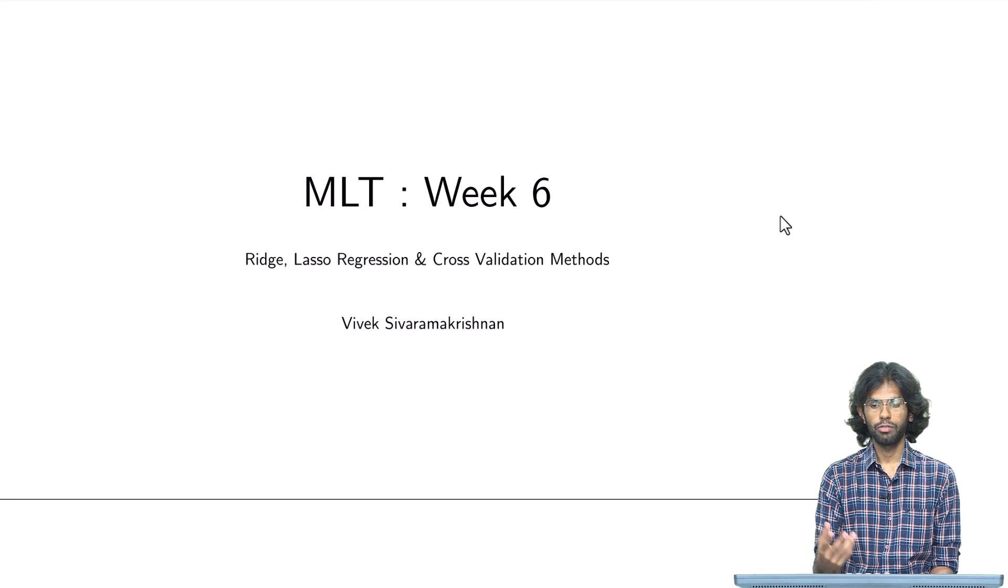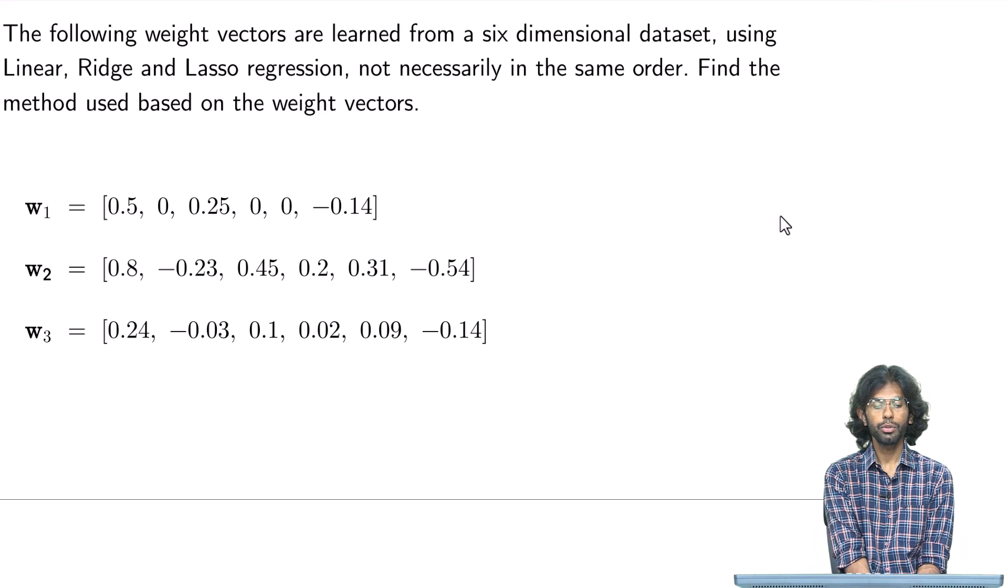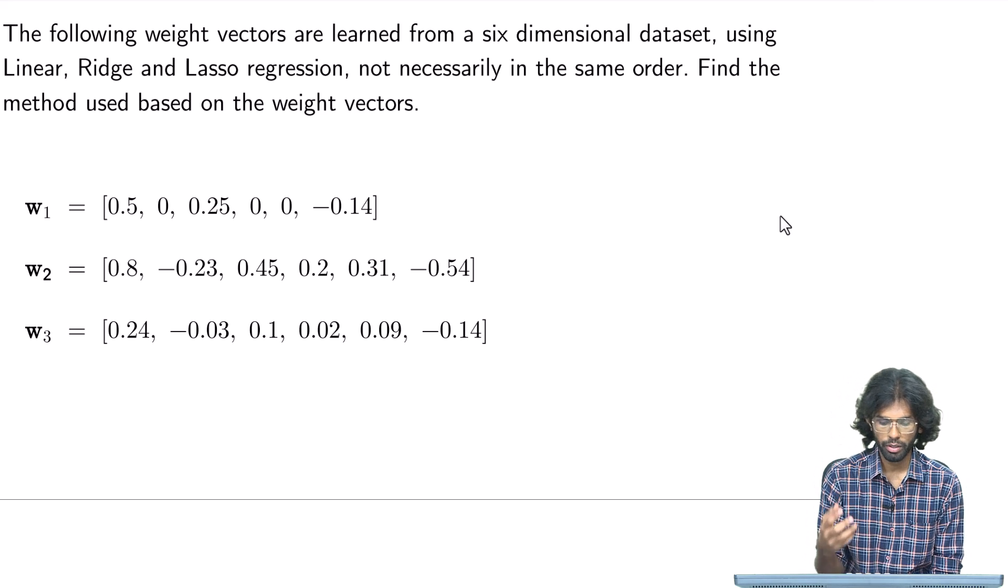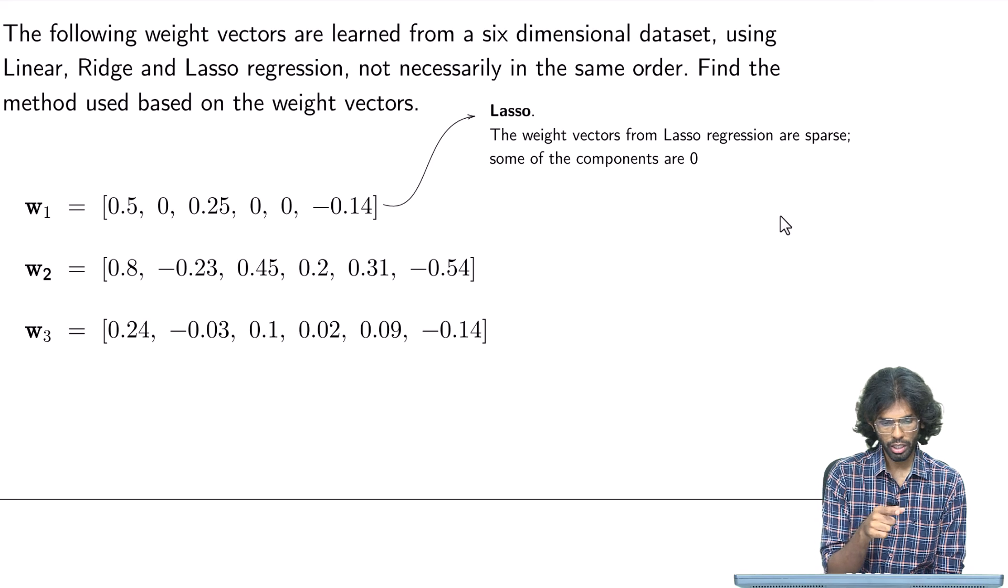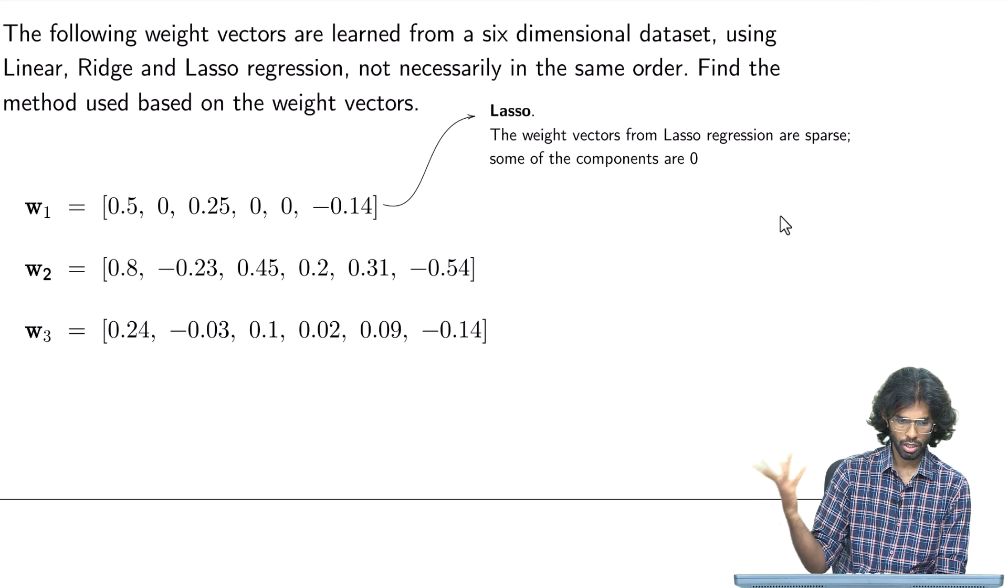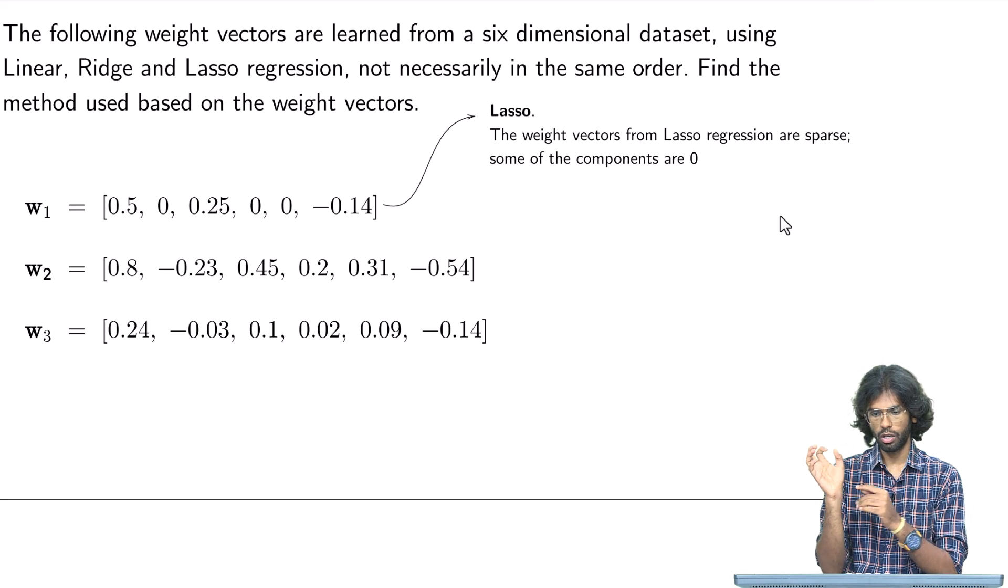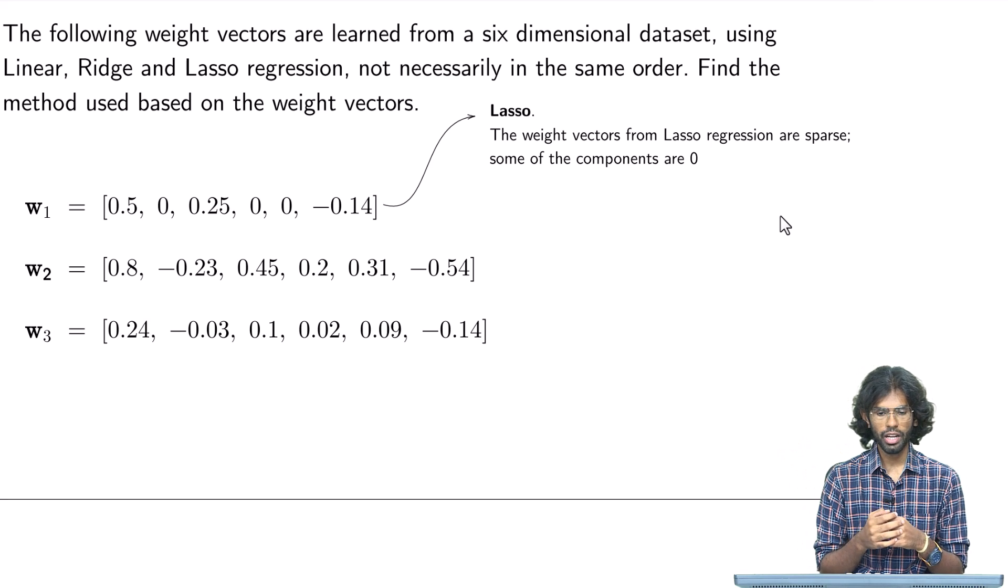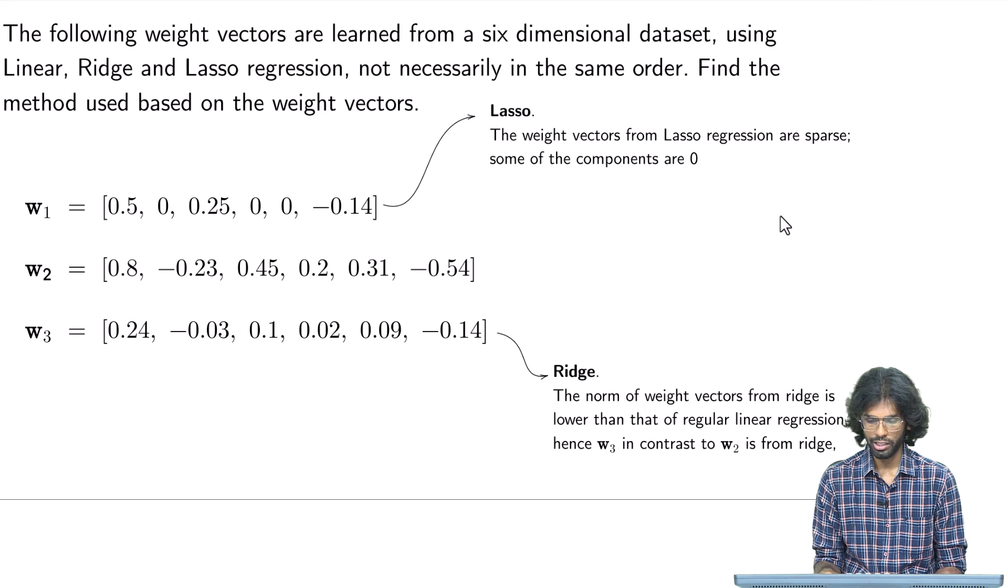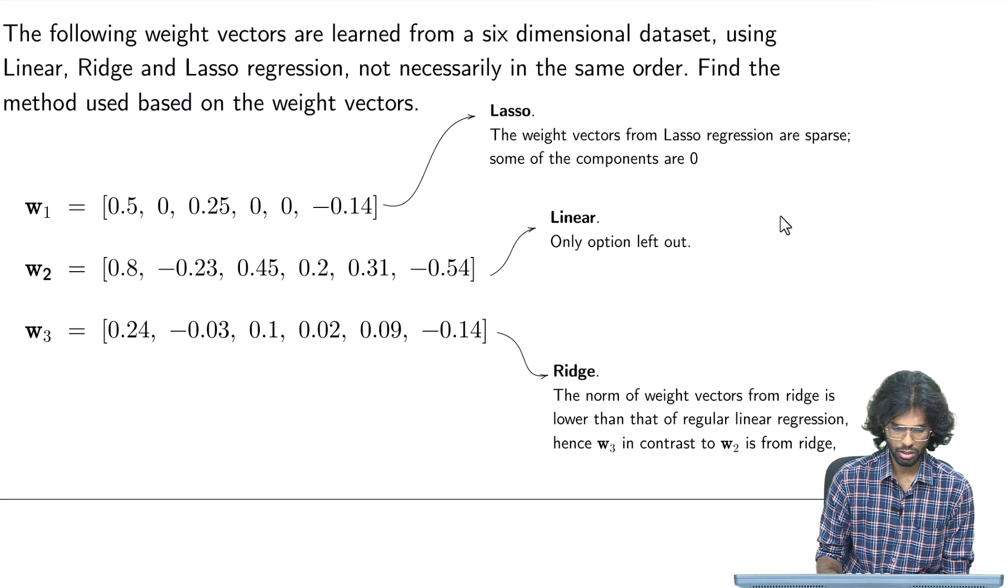We will be going through some numericals for this week now. The first question: the following weight vectors are learned from a six-dimensional dataset using linear ridge and lasso regression, not necessarily in the same order. We need to find which vectors came from which paradigm. First, you can see w1 has sparse weights, and only lasso outputs sparse weights. Therefore, w1 is more likely to be from the lasso regression paradigm. In the second and third vectors, what ridge does is essentially pull your OLS estimate closer to the origin. Since there is OLS and ridge among these two, the one with the smaller norm would correspond to the ridge solution. Finally, since w2 is left out, that is your linear OLS estimate.